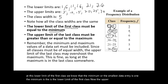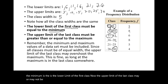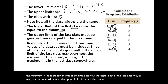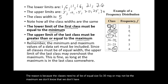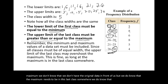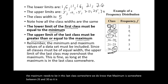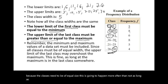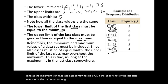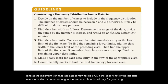The upper limit of the last class may or may not be the maximum — it must be greater than or equal to the maximum. The classes need to be of equal size, so it is okay if the upper limit of the last class overshoots the maximum, as long as the maximum is included in that last class somewhere.